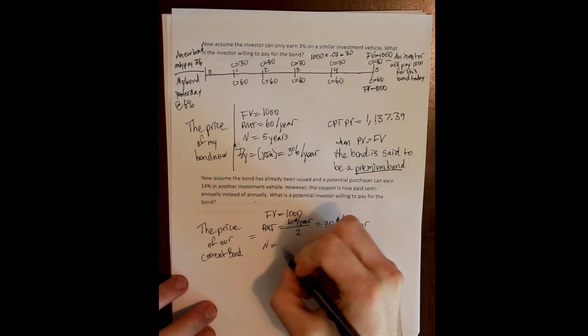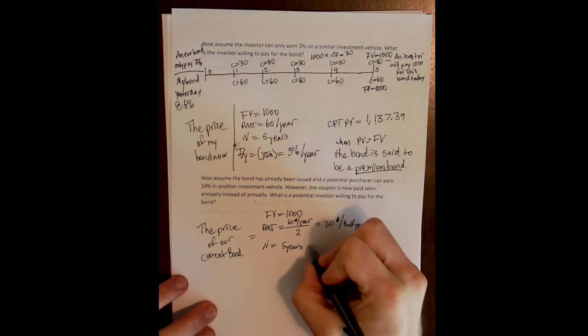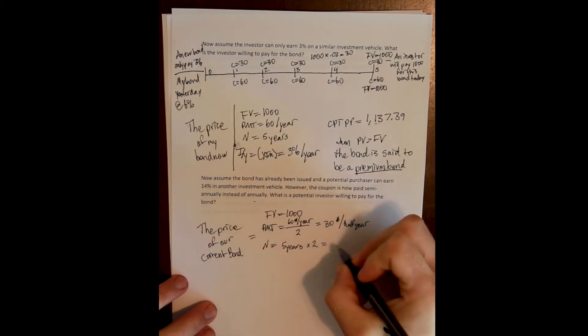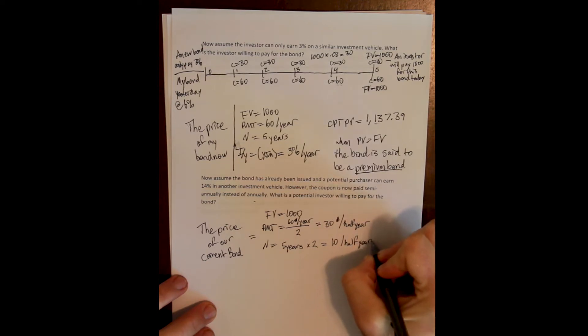My n is my remaining maturity, and there are five years remaining to maturity, but I am being paid semi-annually. So the compounding period means I have 10 half years remaining to maturity.